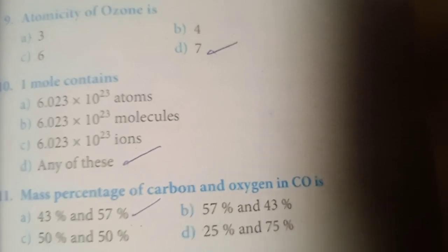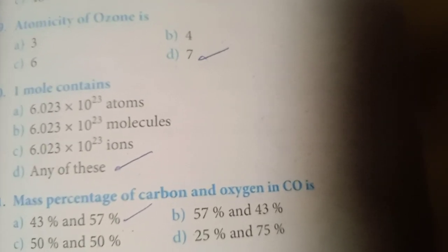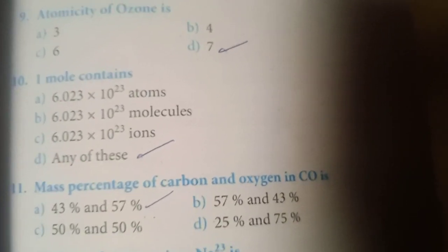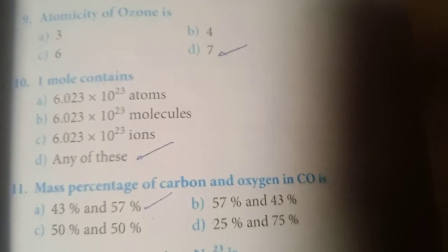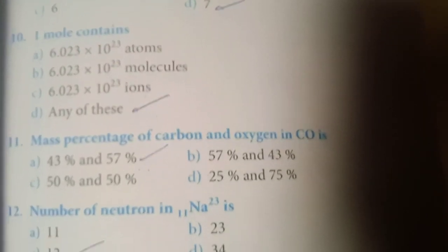Eleventh one. Mass percentage of carbon and oxygen in carbon monoxide is 43% and 57%. Answer is option A.